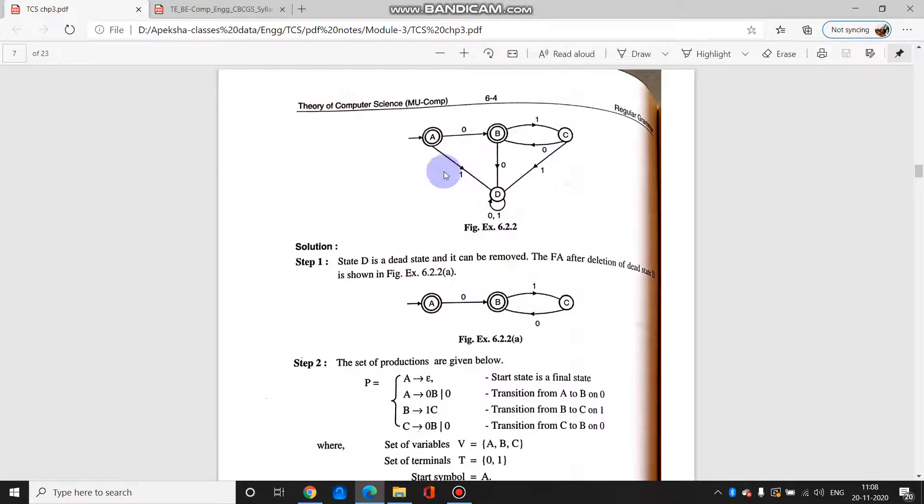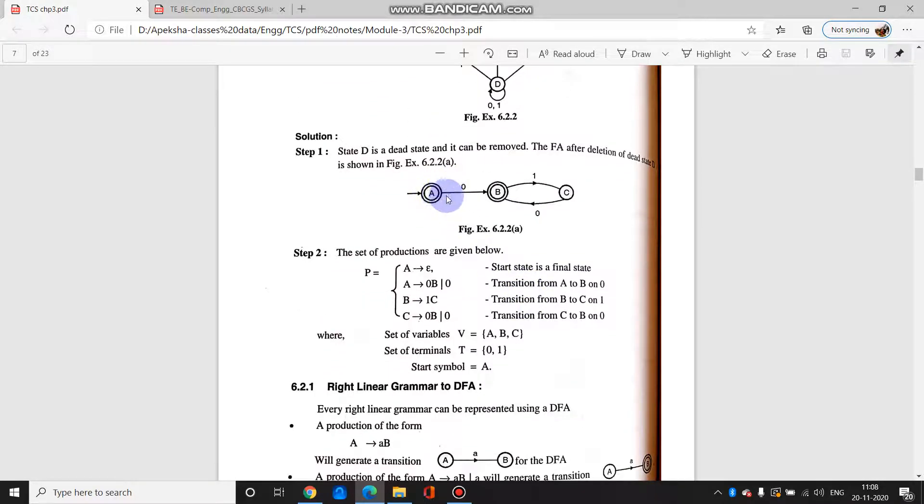This is another example where the given DFA is over here and you have to convert it to the right linear grammar. Now over here, d is the dead state and it can be removed because dead state has no meaning. So our final DFA looks like this. This is s, you can take this is a and this is b. But here they have kept it as is. So we will take a. A tends to epsilon because it is the start state, so it can always take epsilon values.